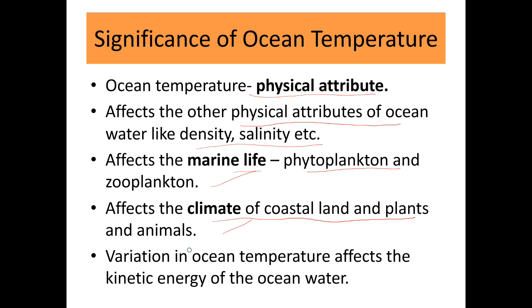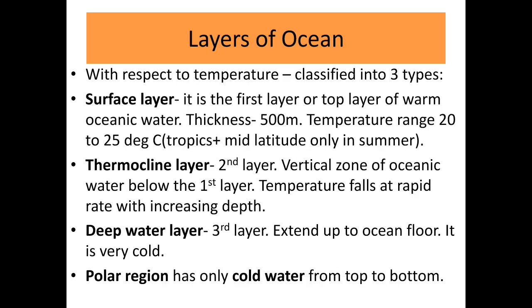The variation in ocean temperature affects the kinetic energy of the ocean water layers. With respect to temperature, we can classify ocean layers into three types: the surface layer, the thermocline layer, and the deep water layer. The surface layer is the first or top layer of warm oceanic water.